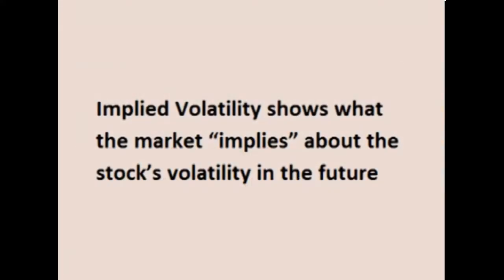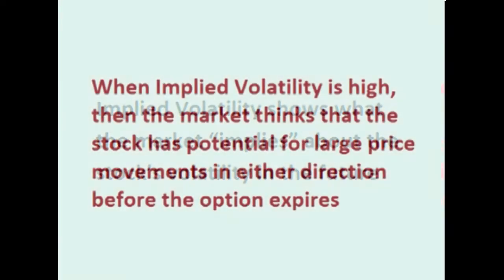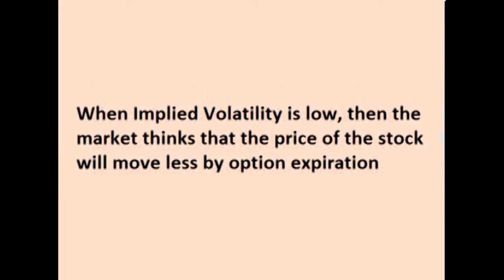Implied volatility shows the market's opinion of the stock's potential moves. In other words, implied volatility shows what the market implies about the stock's volatility in the future. When implied volatility is high, the market thinks that the stock has potential for large price movements in either direction before the option expires. When implied volatility is low, the market thinks that the price of the stock will move less by option expiration.